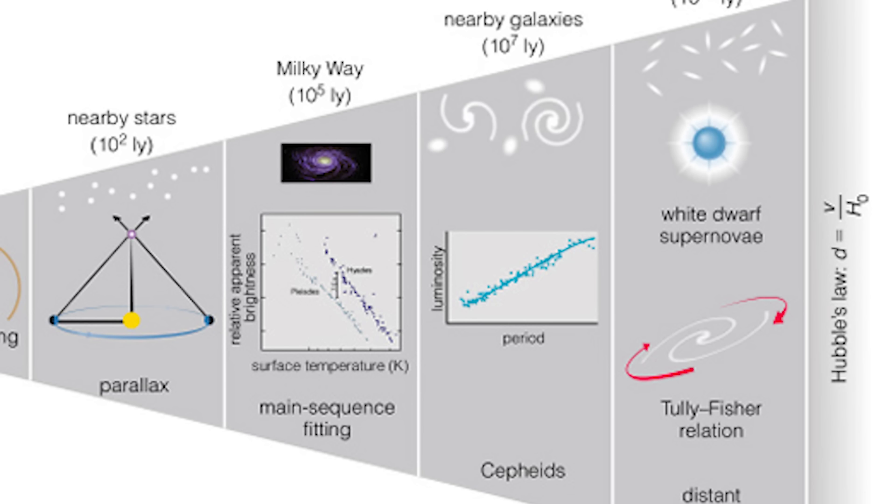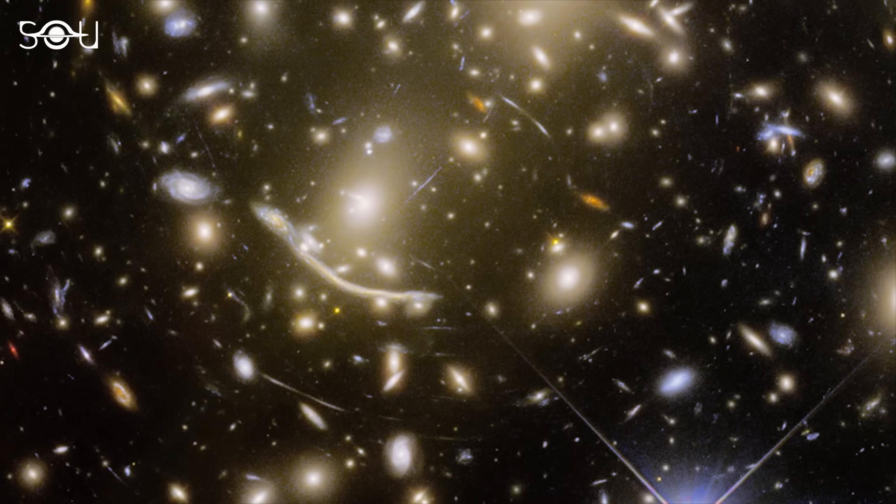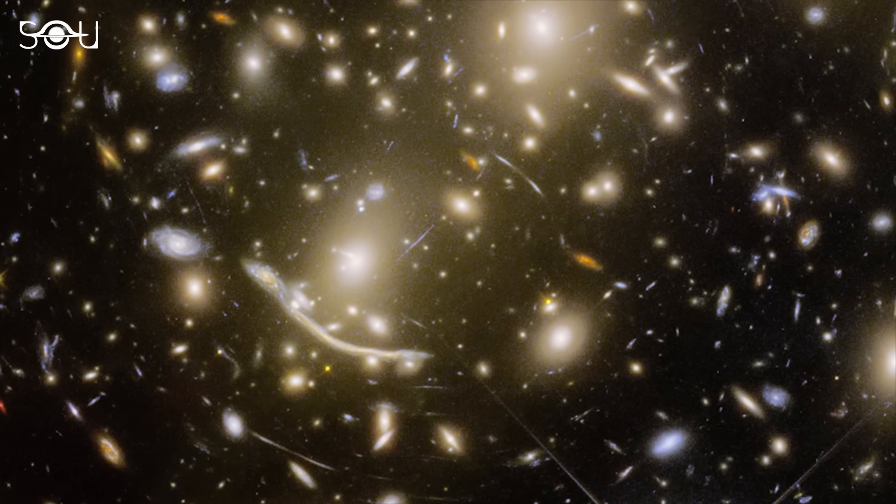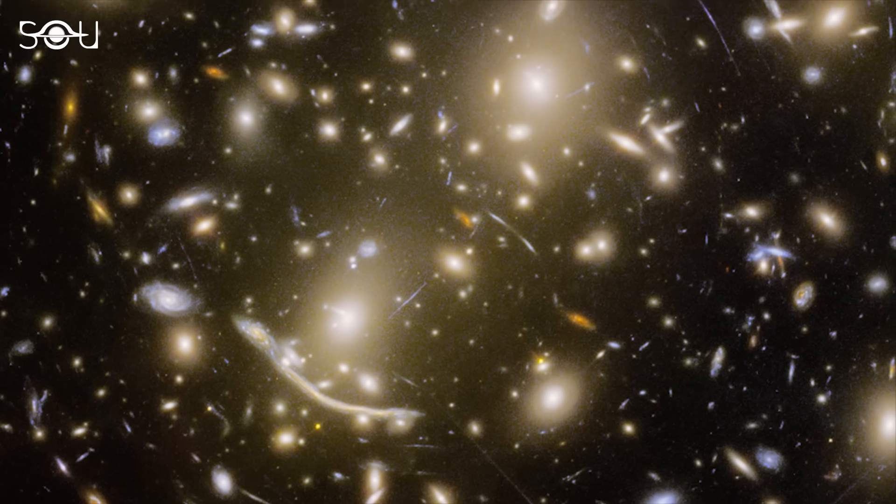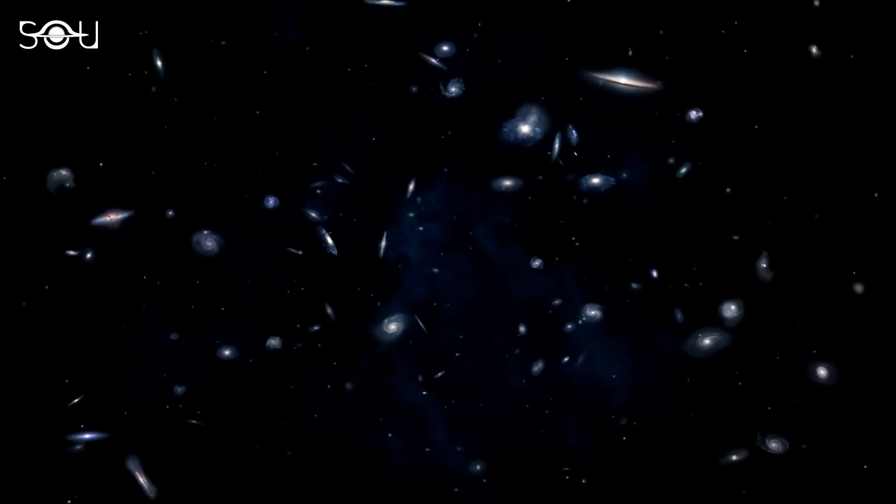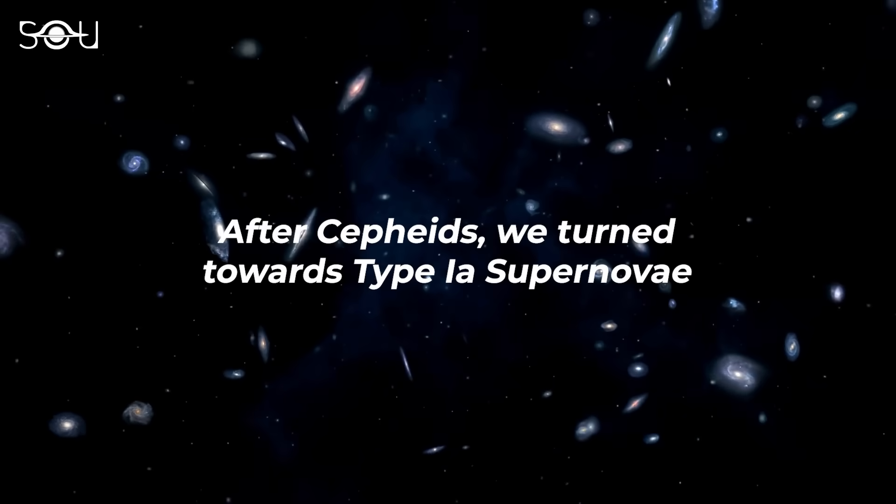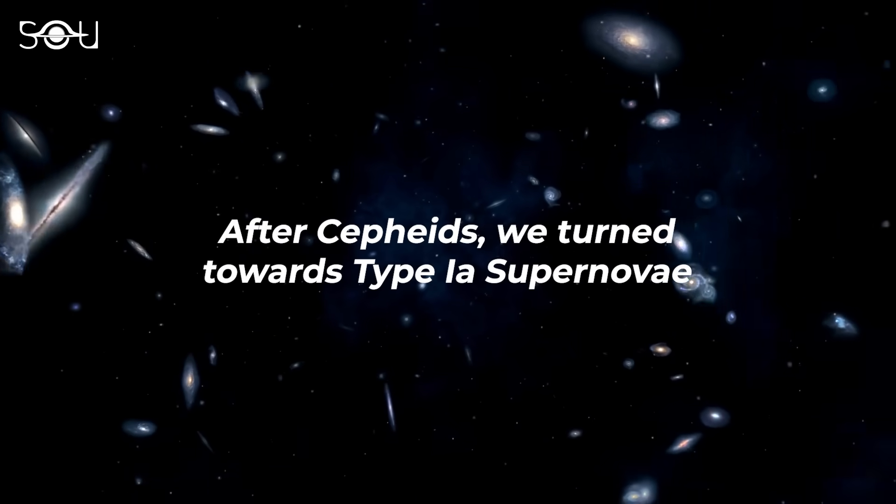Cepheids can only be used to measure distances from about 1 kiloparsec to 50 megaparsec. So what about the distances greater than this range? We cannot fix a constant's value just by observing the behavior of galaxies up to 50 megaparsecs. We need to peer further for precise estimates, and that's where the Type Ia supernovae come into the picture.